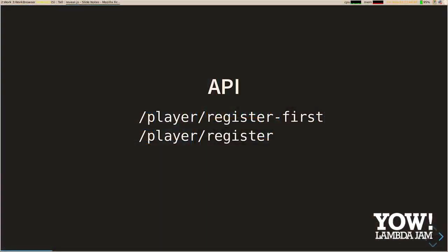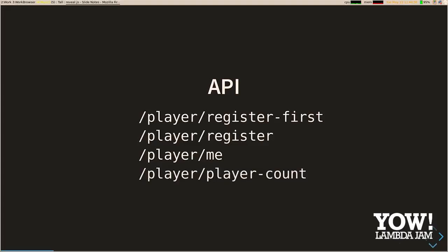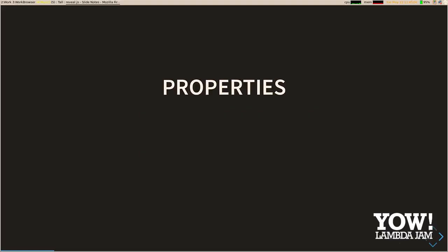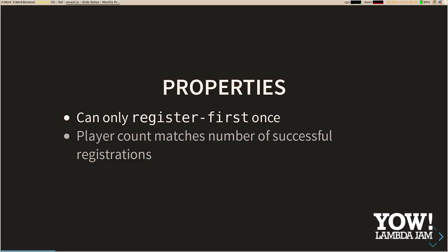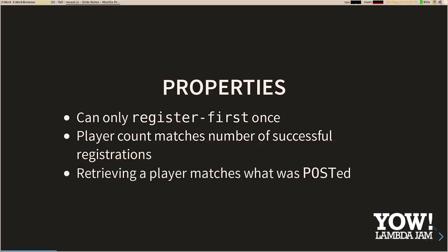After that, we can register subsequent users, but only if we're an administrator. We have a me endpoint, which retrieves player information for the player submitting the request — requires authentication. And we have a player count endpoint, which is public, so anyone can hit it and get back a count of players. Some properties we might want to test: we can only register our first user once; the player count matches the number of successful registrations; and the data we've put in for players matches what we get back.